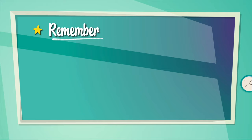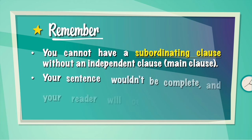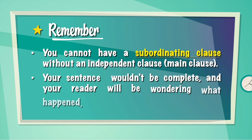Things to remember: you cannot have a subordinating clause without an independent clause — that is, your main clause. Your sentence wouldn't be complete, and your reader will be wondering what happened.